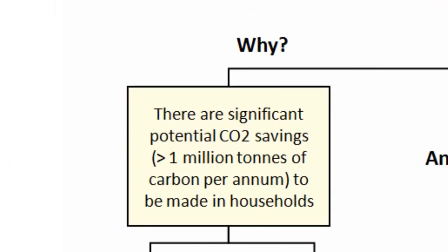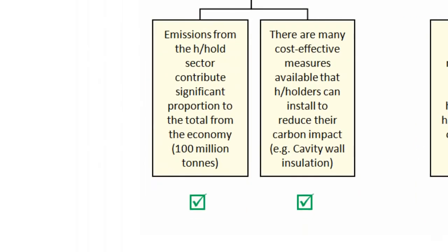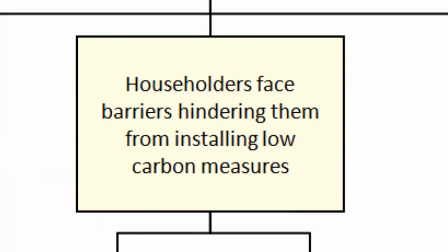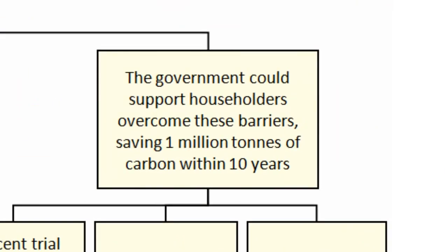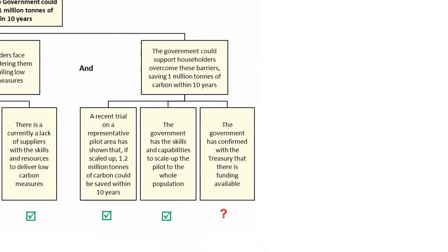Why do they believe their first piece of evidence? Well, emissions from the household sector contribute a significant proportion to the total — approximately 100 million tonnes — and there are many cost-effective measures available that households can install to reduce their carbon impact. Why do they believe the second piece? Because low carbon measures are costly in many households with low levels of disposable income, and there is currently a lack of suppliers with the skills and resources to deliver low carbon measures. Why do they believe the government could support householders? They did a pilot which showed that if scaled up, they would achieve 1.2 million tonnes of carbon savings within 10 years, and the government has the skills and capabilities to scale the pilot to the whole population. However, they hadn't yet confirmed with the Treasury whether there was funding available.